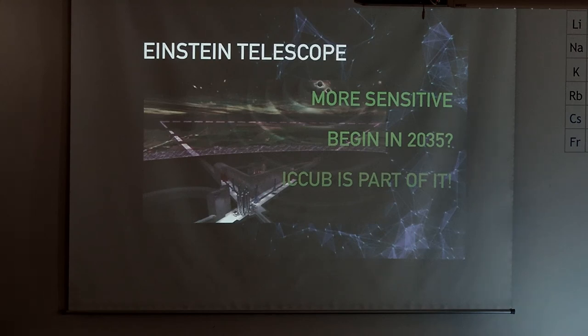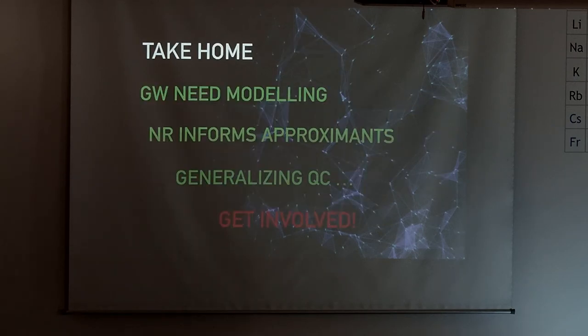We're organizing a round table to discuss the scientific case in April, so stay tuned. These are the take-home messages. I want to close with this: we need modeling, very detailed modeling, but the role of numerical relativity is to inform the approximants. We're in the process of generalizing the quasi-circular trajectories and this is a great time to get involved if you're interested in this field. Thank you so much.